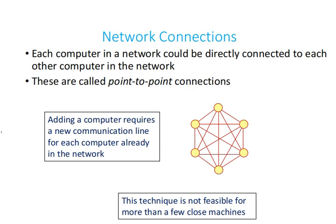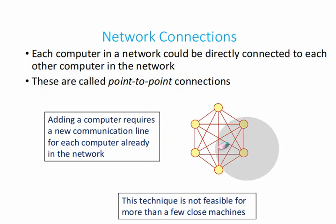Each computer in a network could be directly connected to every other computer — these are called point-to-point connections, also known as mesh topology. Adding a computer requires a new communication line for each computer already in the network, which is expensive. This technique is not feasible for more than a few machines — imagine 10 computers each needing a separate cable to every other computer.